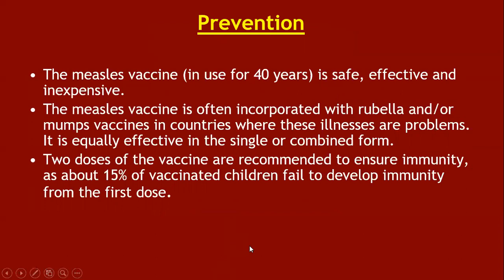The measles vaccine has been in use for 40 years and is safe, effective, and inexpensive. It is usually incorporated with rubella or mumps in countries where those illnesses are a problem and is equally effective in single or combined form. Two doses of vaccine are recommended to ensure immunity, as about 15 percent of vaccinated children fail to develop immunity from the first dose.